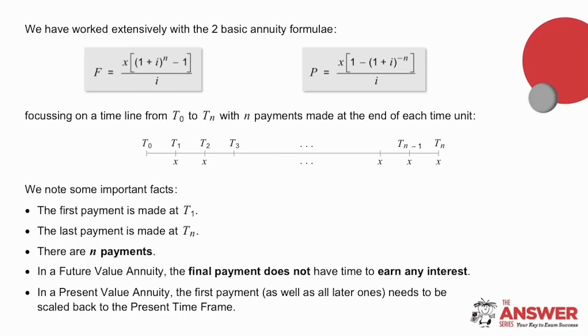Let's start by looking at the future value and present value annuity formulae, both of which appear on the formula sheet provided in exams. These two formulae are applicable when you have N equal regular payments made over N time periods, where the first payment is made at T1 and the last at TN.